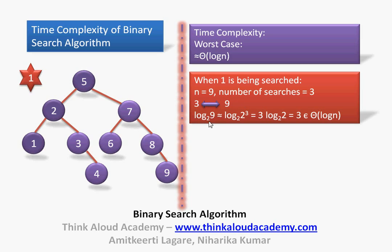We calculate log₂(9), which is approximately log₂(8) = log₂(2³). By the logarithm property, log₂(2³) = 3·log₂(2) = 3·1 = 3. So the number of searches, 3, is approximately equal to log₂(9). This means the time complexity of binary search is of the order of log n.